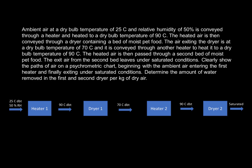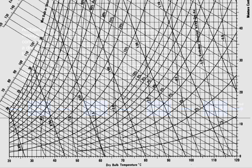The exit air from the second bed in that second dryer leaves under saturated conditions. We want to clearly show the paths of air on a psychrometric chart beginning with the ambient air and leaving as under saturated conditions, and also determine the amount of water removed in the first and second dryer per kilogram of dry air.